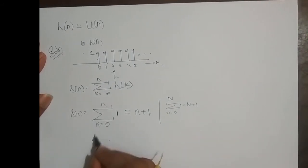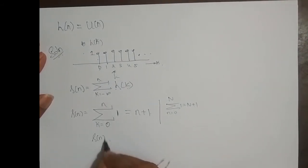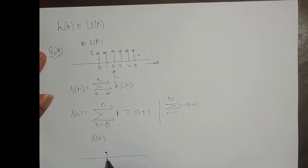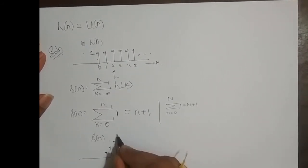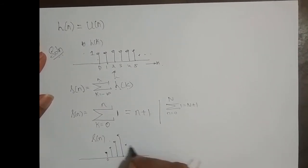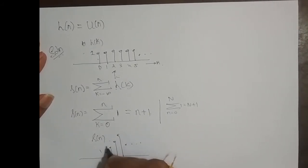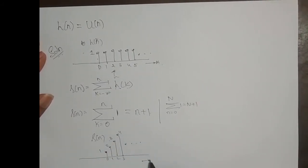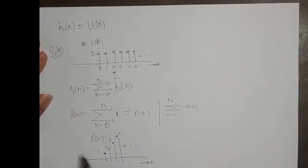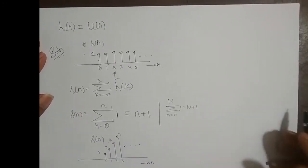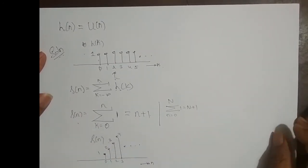If I try to sketch this step response, this is how it looks. At n equal to 0 it is 1, then 2, 3, 4 and it goes on. In case they ask you to sketch the step response, we can do it. Once you get S of n, you can sketch it.